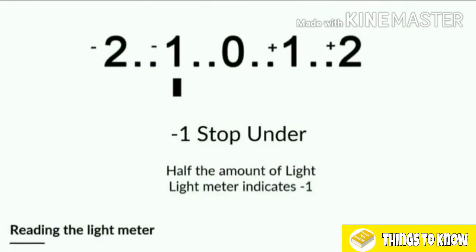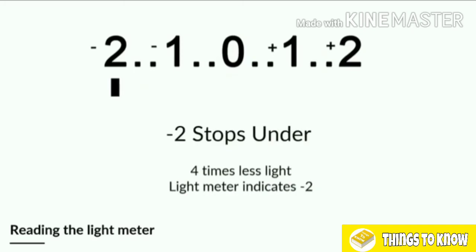On the other side: minus 1 stop means half the amount of light is now getting into the scene — reducing the amount of light by half when it's 1 stop underexposed, and the light meter indicates minus 1. If it reads minus 2, it's four times less light, which means the image is getting very dark.